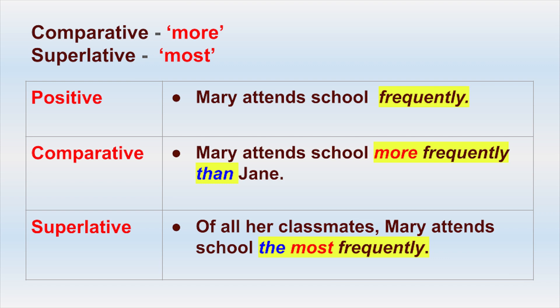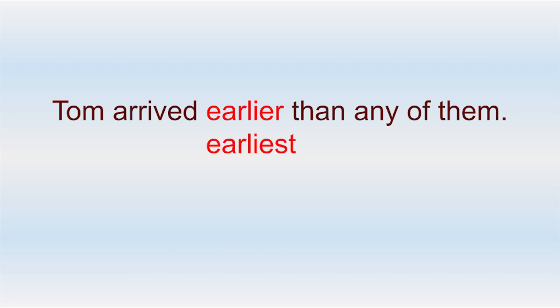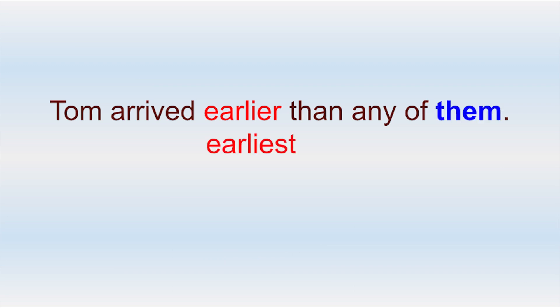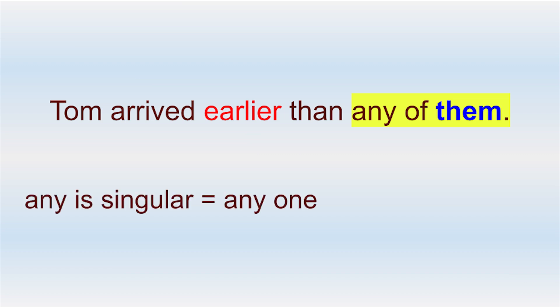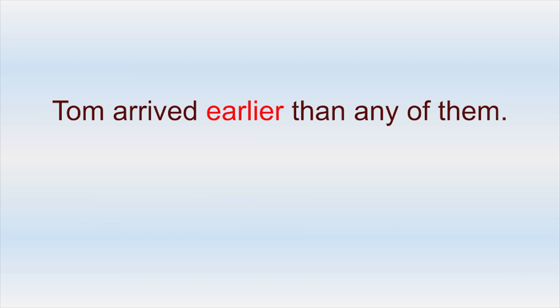Now let's look at this sentence: Tom arrived earlier than any of them. Why do we use the comparative 'earlier' and not the superlative 'earliest,' when the pronoun 'them' tells us there are at least two others? We use the comparative 'earlier' because it compares Tom with 'any of them,' and 'any' is singular — it means 'anyone.' So this sentence is saying Tom arrived earlier than anyone, meaning any one other person. Therefore, we use the comparative adverb 'earlier.' This sentence is indeed correct.